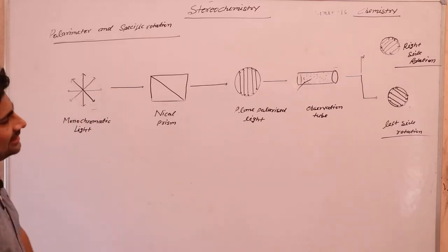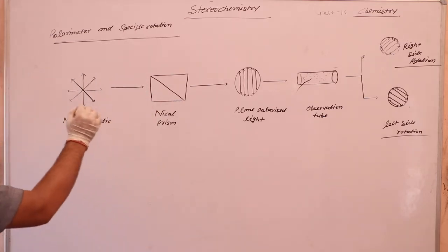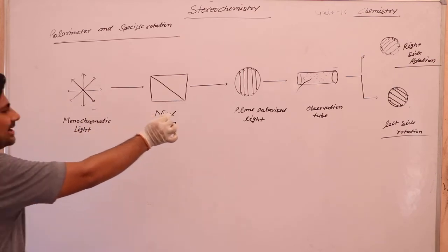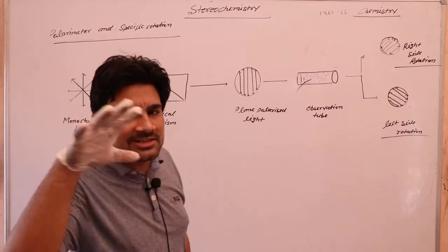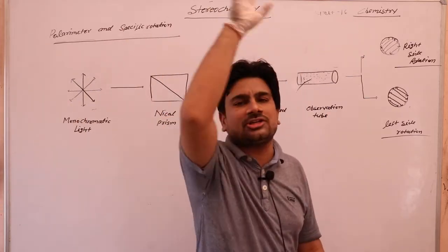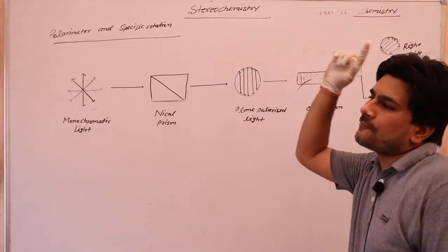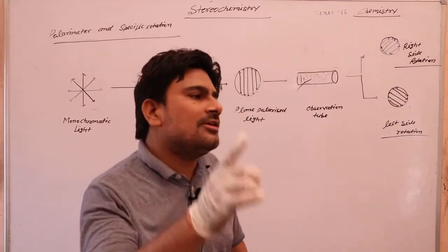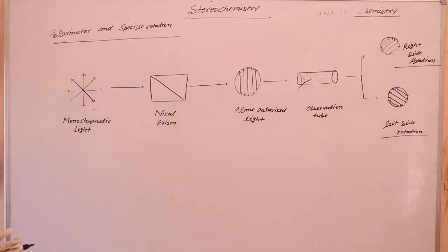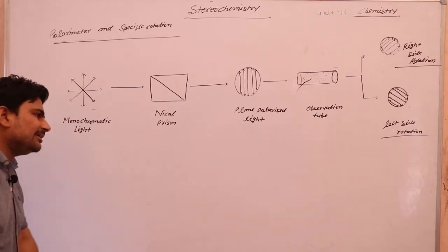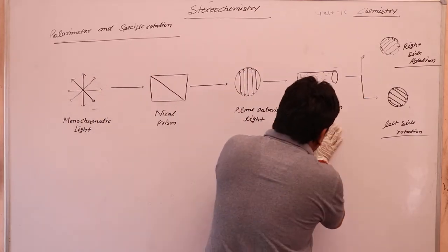The monochromatic light is converted into plane polarized light. Monochromatic light vibrates in all directions, whereas plane polarized light vibrates in only one direction. This plane polarized light is then passed through an observation tube.